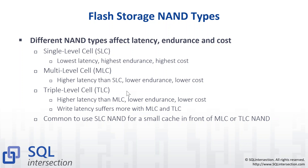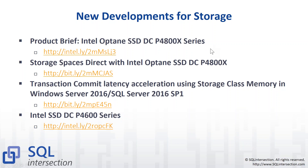New developments to be aware of: Intel Optane — they finally have a product using a different technology than traditional NAND that has really good performance under low queue depths. You can use it with Storage Spaces Direct or as an internal card. And having the ability to use storage class memory — non-volatile DIMMs — to cache the tail of the log is another very interesting capability you can take advantage of with modern servers.